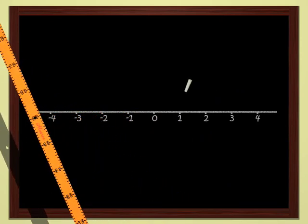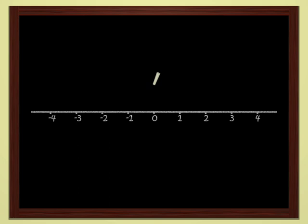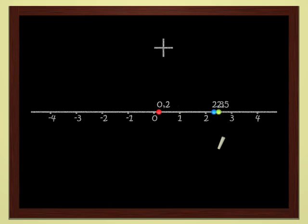Just as we can add numbers, we can add points. Here is a red point on the line and another blue one. Let's add these two points. We get the green point. One plus two equals three.